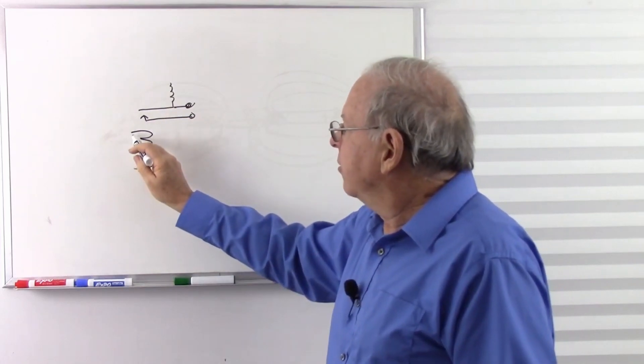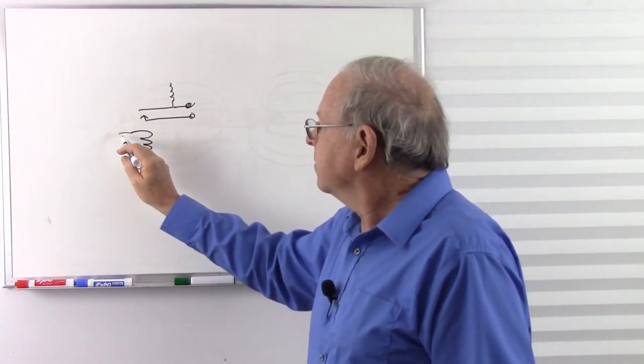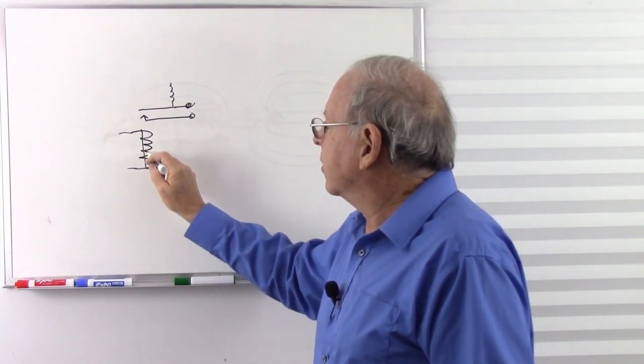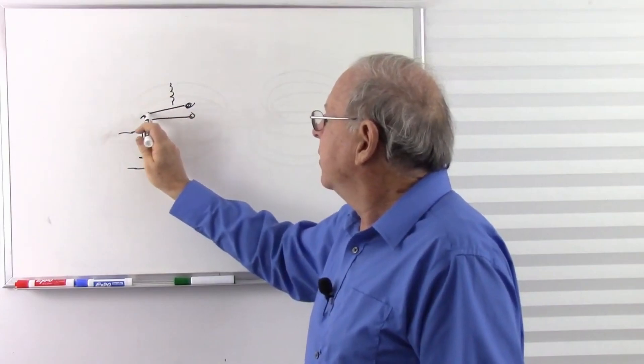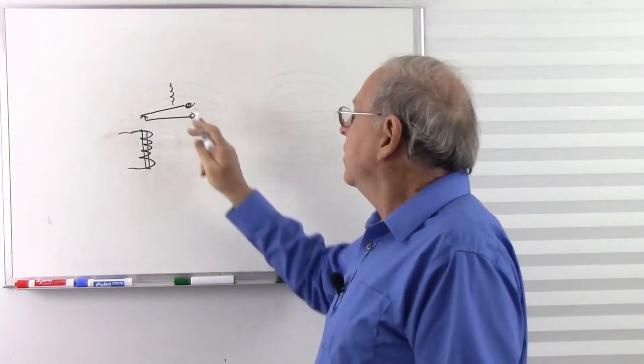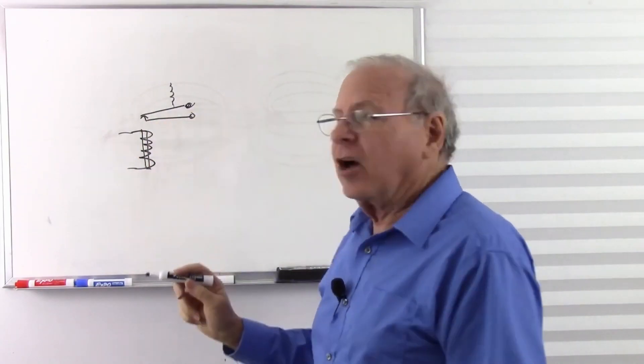And so when we energize the coil, which would probably have an iron core to increase its efficiency. We energize that coil. It's going to pull down the actuator or the armature, as it's called, and make contact.